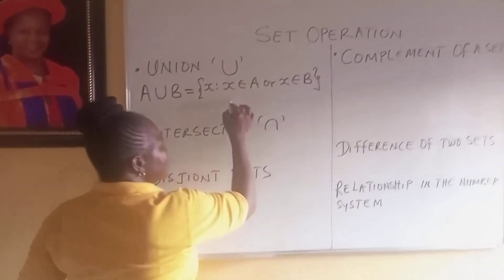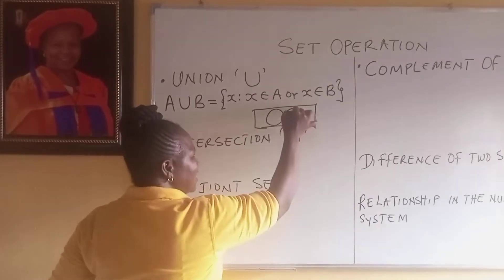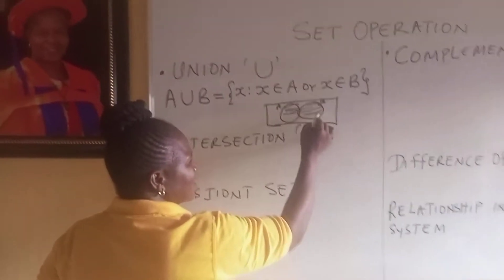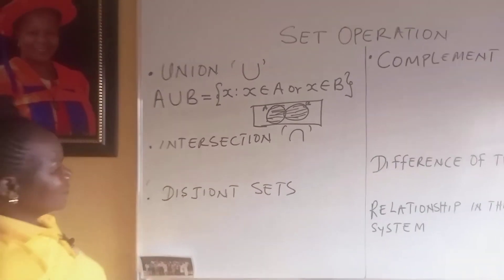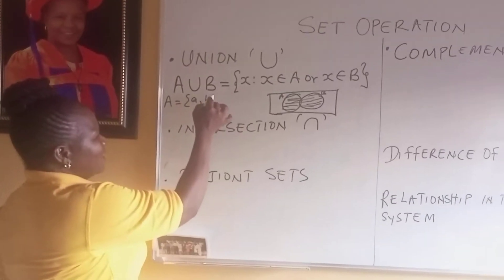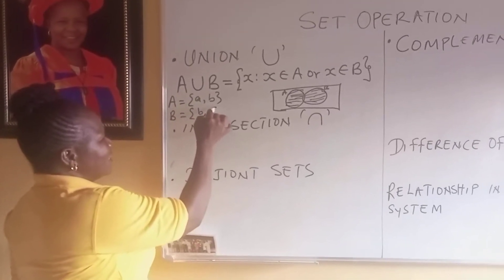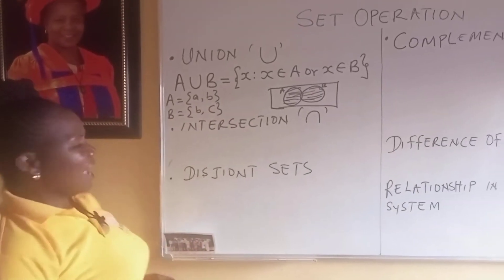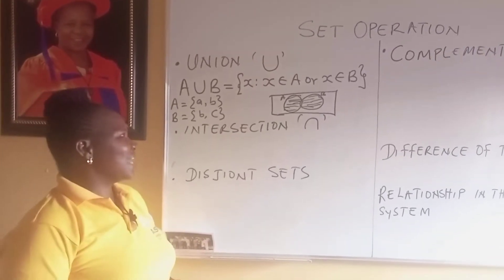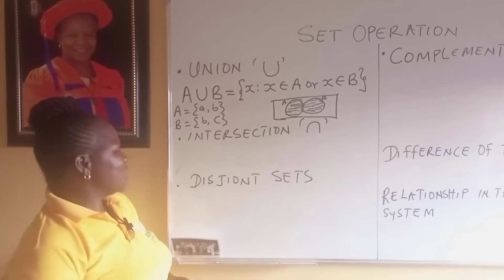We can see it pictorially. If this is A and this is set B, then A union B is this combined set. For example, if A equals {A, B} and B equals {B, C}, then A union B is equal to the set containing A, B, and C.